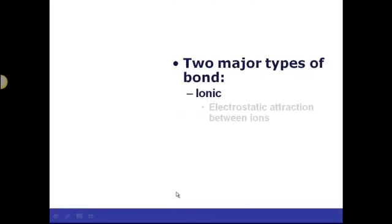There are two major types of bonds. The first is the ionic type of bond, which involves an electrostatic attraction between two different ions. This means that electrons have to be donated from one atom to another atom, causing charged particles to occur.